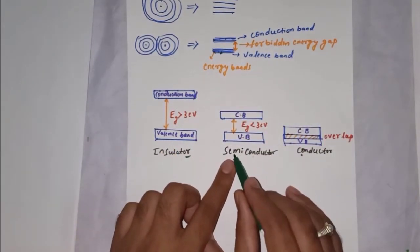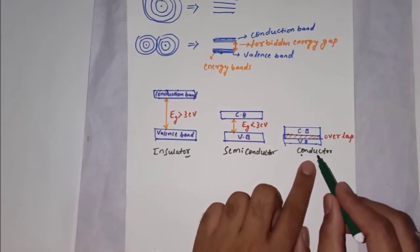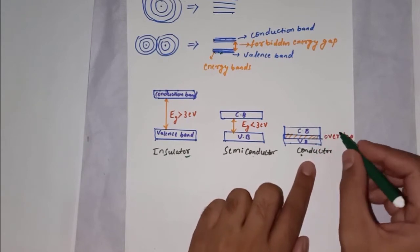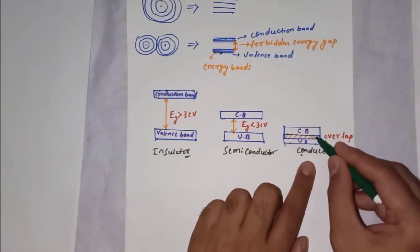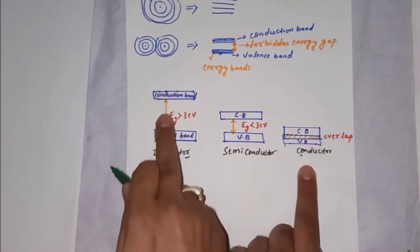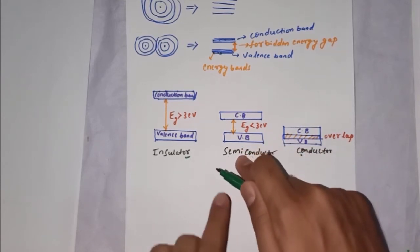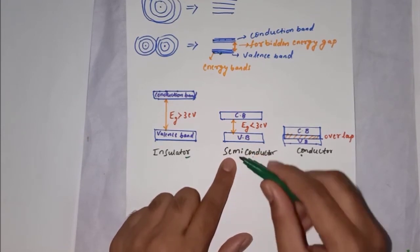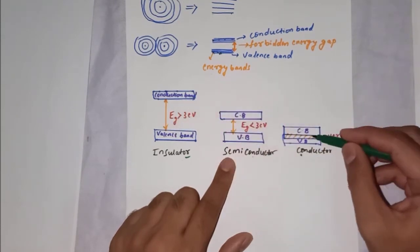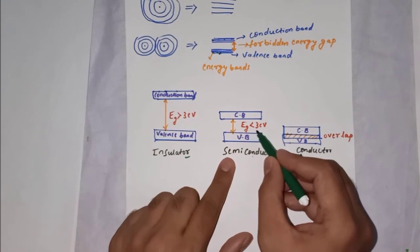In a conductor, the valence band and conduction band overlap each other, so there is no forbidden energy gap — the energy gap is zero. For an insulator the energy gap is greater than 3 eV. In a semiconductor, the energy gap between the valence band and conduction band is neither very large nor overlapping — it is less than 3 electron volts.